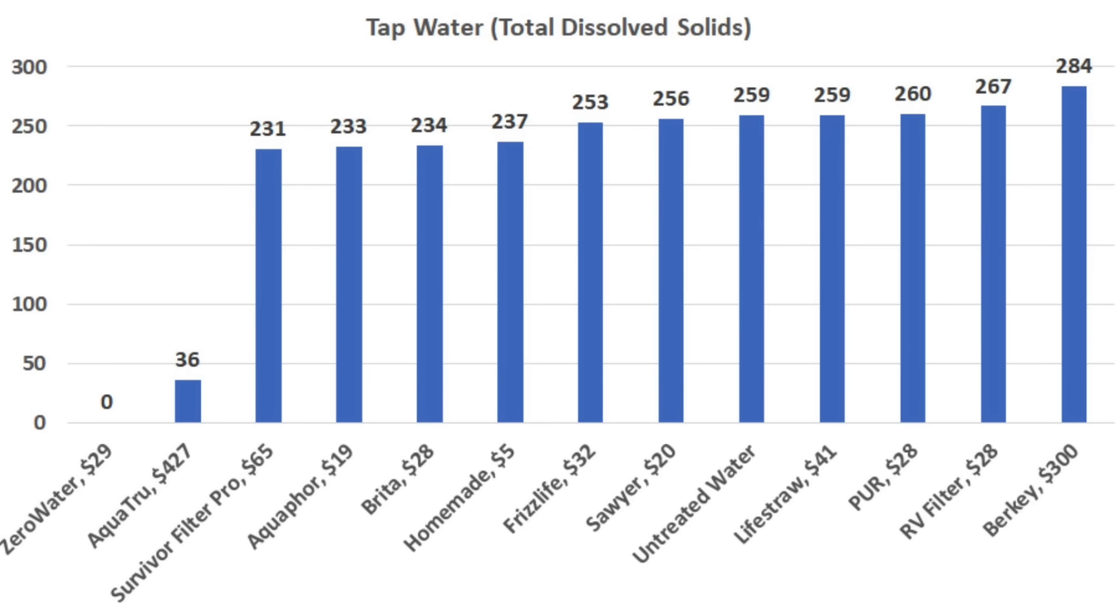If you're looking for the filter that does the best job removing total dissolved solids, the Zero Water came out on top at zero parts per million, but the AquaTrue did nearly as well at 36. The Survivor Pro, Aquaphor, and Brita all performed nearly the same at 231, 233, and 234 parts per million, respectively.